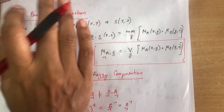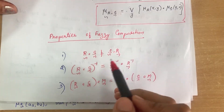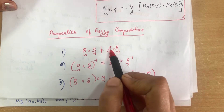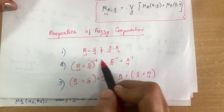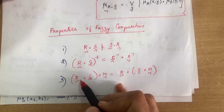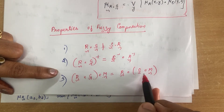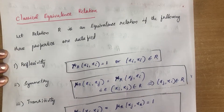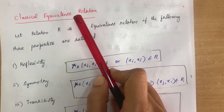The properties of fuzzy composition are: commutativity does not hold — R∘S ≠ S∘R. However, (R∘S)⁻¹ = S⁻¹∘R⁻¹. Associativity holds: (R∘S)∘M = R∘(S∘M). These are the properties that hold for fuzzy composition.